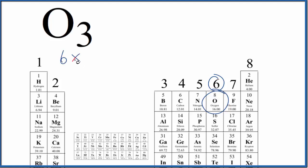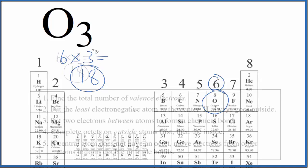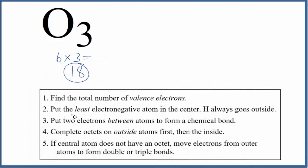We have six times three oxygen atoms, giving us 18 total valence electrons for the O3 Lewis structure. With Lewis structures, we normally put the least electronegative atom in the center, and hydrogen always goes on the outside. But here we just have oxygen atoms, so we'll put three oxygen atoms in a row.